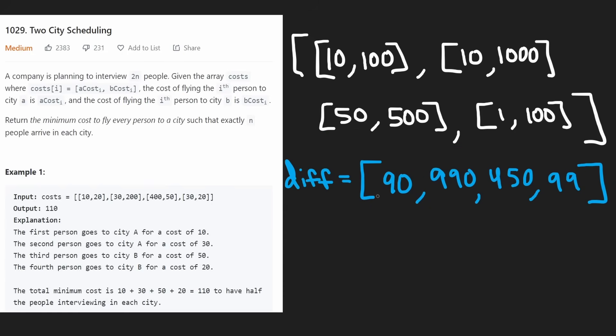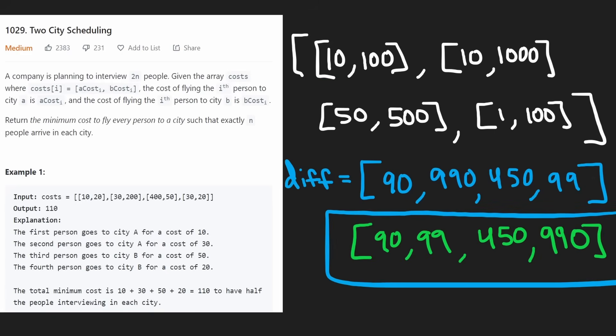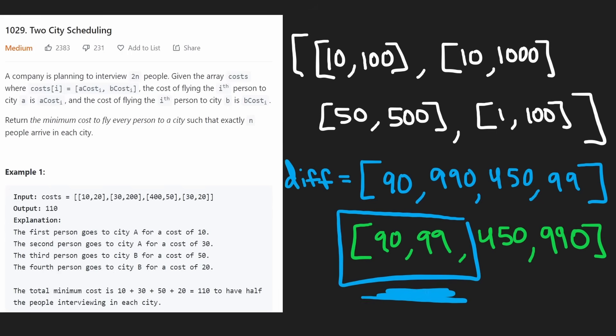Now the question is, of these four people, who should we send to city B? Probably the ones that are relatively cheap. So these two people should be sent to city B. How would we know that? Because we need to send half of the people to city B. We would probably have to sort this input array. We would sort this input array and get the first half of them. So these are the people we're going to be sending to city B. These are the people we're sending to city A.